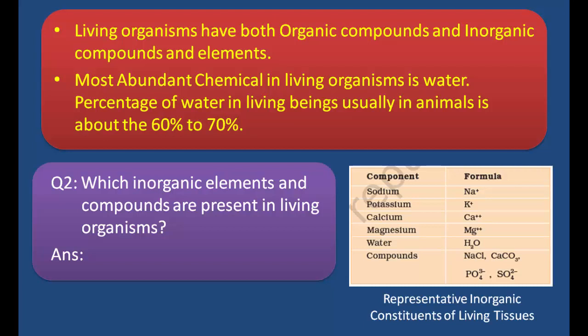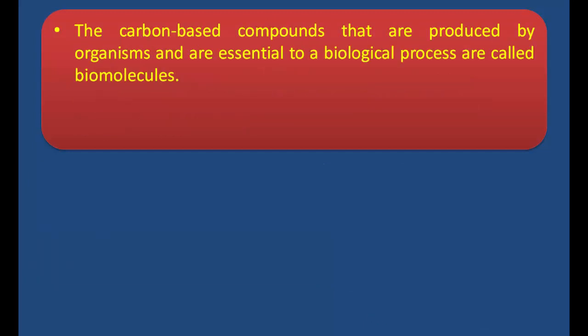Q2: Which inorganic elements and compounds are present in living organisms? As shown in the table, inorganic elements like Sodium, Potassium, Calcium, Magnesium and inorganic compounds like water, Sodium chloride, Calcium carbonate, Phosphate and Sulfate are present in living organisms. Inorganic elements like Sodium, Potassium, Calcium, Magnesium are found in organisms, and inorganic compounds like water, sodium chloride, calcium carbonate, phosphate, and sulfate are also found.